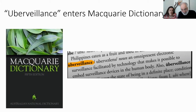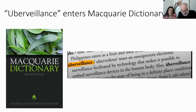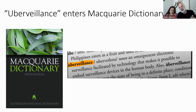I was happy to see it defined very close to how I had originally defined it. So it's defined as an omnipresent electronic surveillance facilitated by technology that makes it possible to embed surveillance devices in the human body. I was particularly happy that the definition allowed for some elasticity, allowing for new innovations and new technologies which were aligned to surveillance technology.